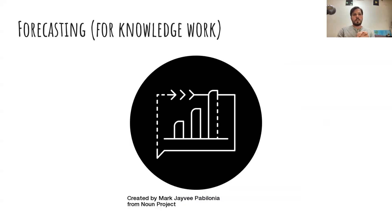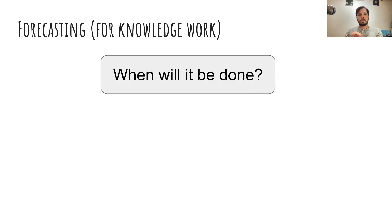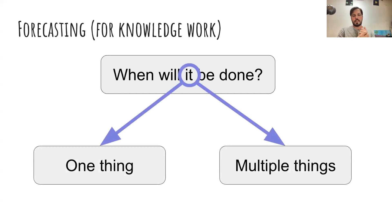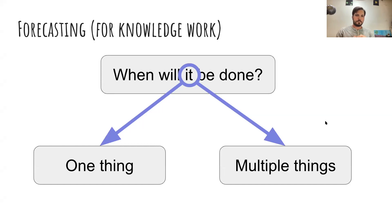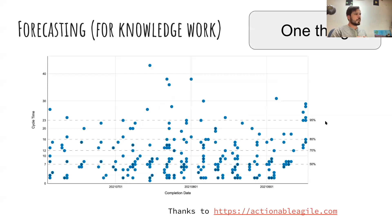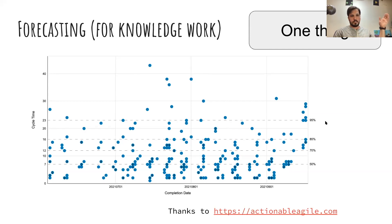So how can we take those practices and apply them to knowledge work? The original question — when will it be done — can mean two different things. There's either one thing: when is this one card, this one epic, this one thing going to be done? Or multiple things: when are we going to have this bucket of stories or features done? Each requires a different kind of forecast. To forecast a single thing, we can use a cycle time scatter plot, tracking cycle time on the vertical axis and the date something finished on the horizontal axis.